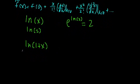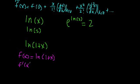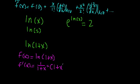So first things first, let's take multiple derivatives. If our function is ln of 1 plus x, then our first derivative f prime of x is just 1 over 1 plus x. Normally you apply the chain rule, but the derivative of 1 plus x is just 1, so multiplying by 1 doesn't change anything. I'll rewrite this as 1 plus x to the negative 1 power.